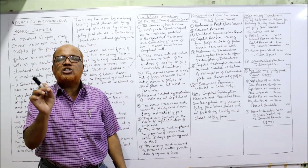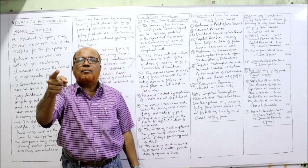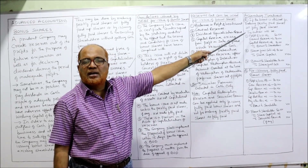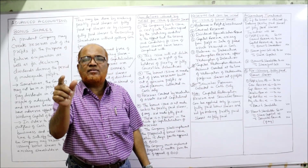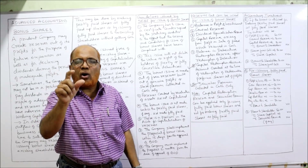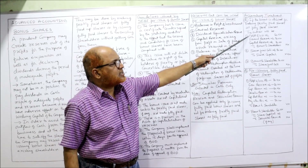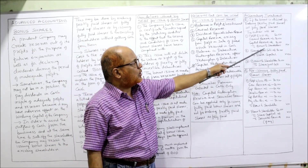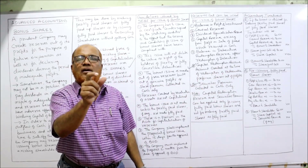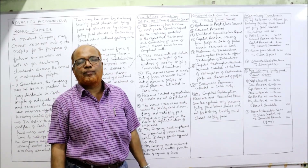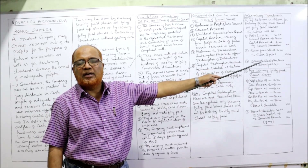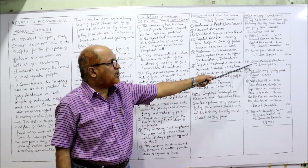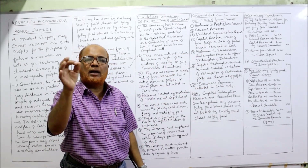For the accounting treatment when bonus shares are issued, there are two ways. First, converting partly paid shares into fully paid — three entries are required. Entry one: debit all the reserves being used (e.g., profit and loss account, general reserve, capital reserve) and credit bonus to shareholders account. Entry two: debit share final call account and credit share capital — that is the final call money due. Entry three: debit bonus to shareholders account and credit share final call account — being the adjustment of final call from bonus.